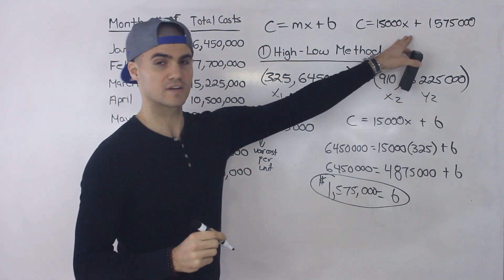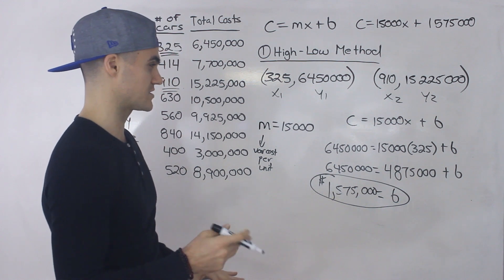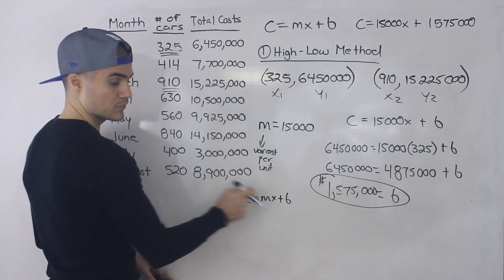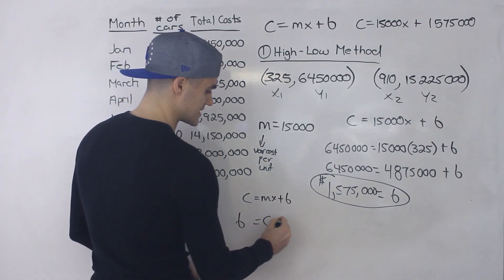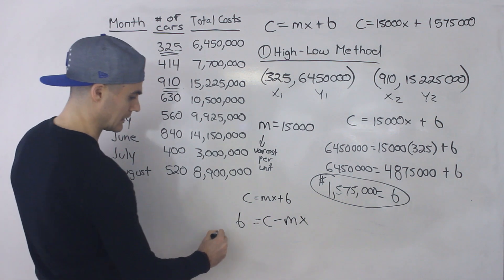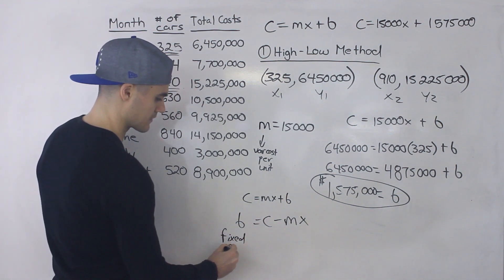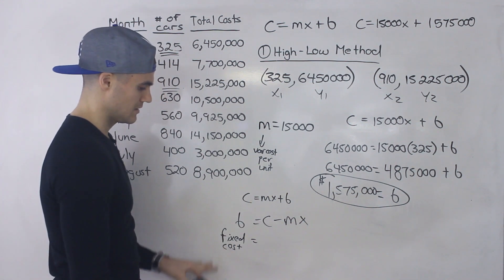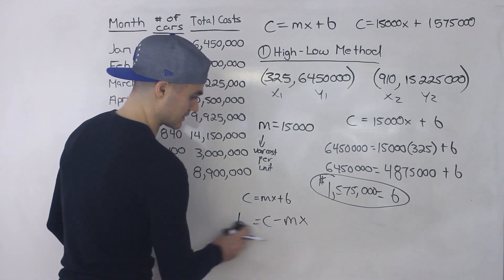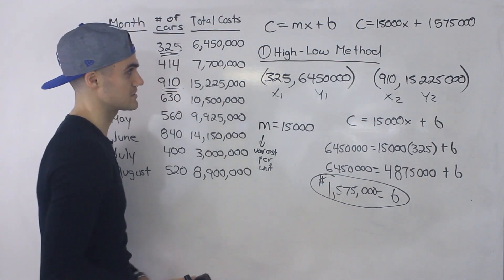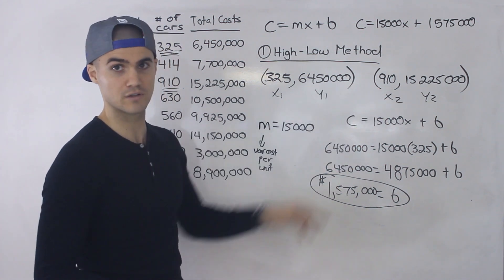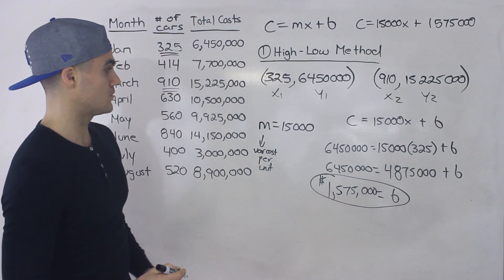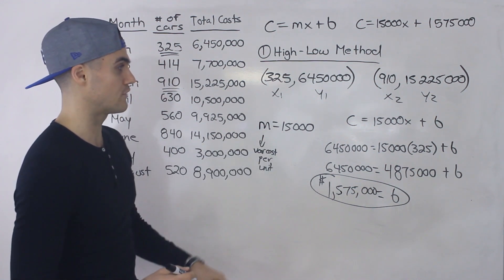A lot of times textbooks will show a formula for this b value: fixed cost equals total cost minus the variable cost times the output. That's just a rearrangement of c equals mx plus b, isolating for b. But I think memorizing these formulas is a little overkill. It's better to keep it simple — you've got two points, find the equation of a line, find the slope, find the b value using basic high school math. That gives you the variable cost per unit and the fixed cost.